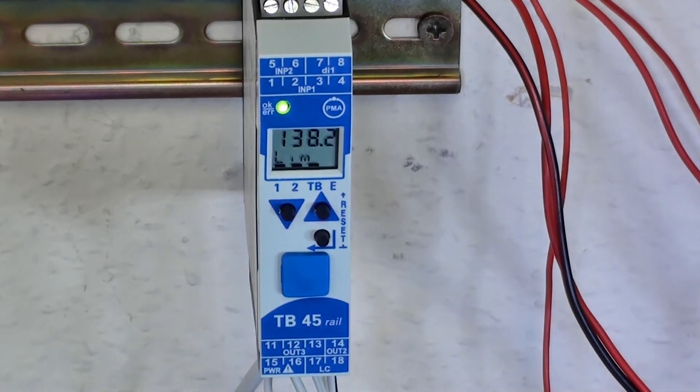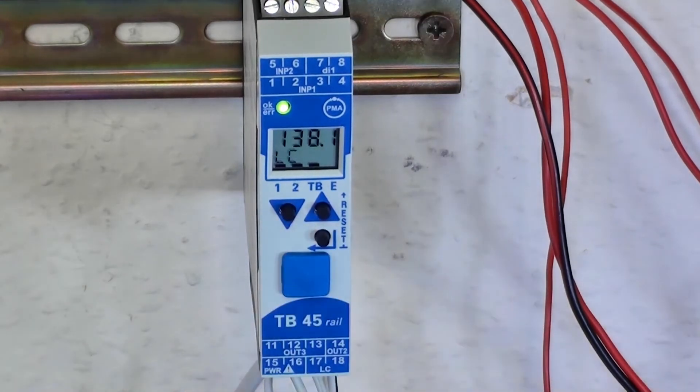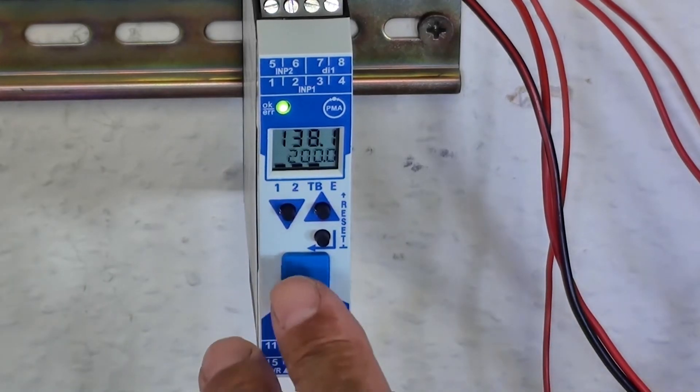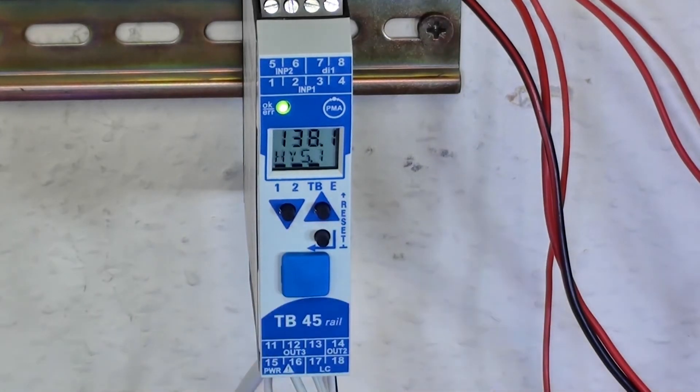The first parameter it shows is LIMIT. LC, this is the limit alarm, the exceed limit alarm value. And I have it, I've programmed it for 200 degrees C. And also with a hysteresis of 5 degrees C.